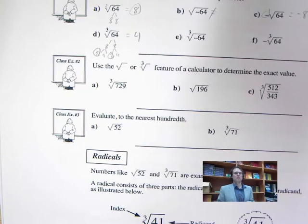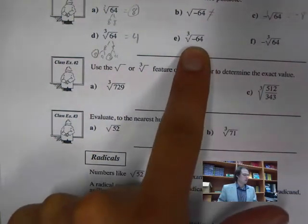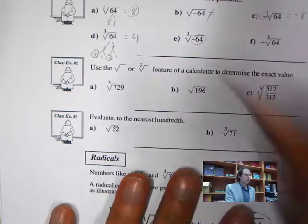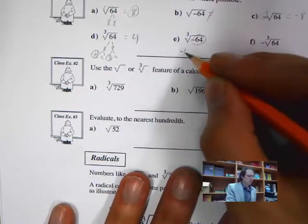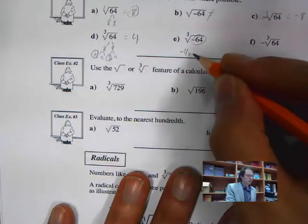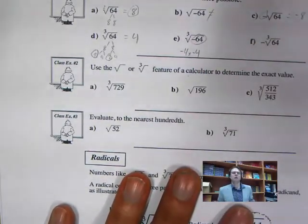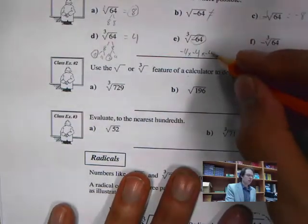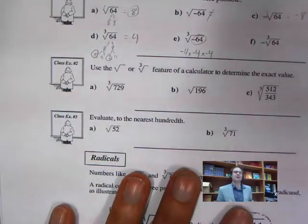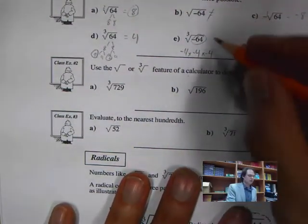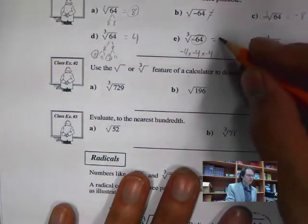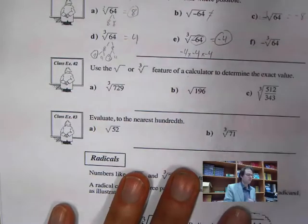For the cube root of negative 64, three identical numbers must multiply to negative 64. Negative 4 times negative 4 is positive 16, and positive 16 times negative 4 is negative 64. So the answer for the cube root of negative 64 is negative 4.